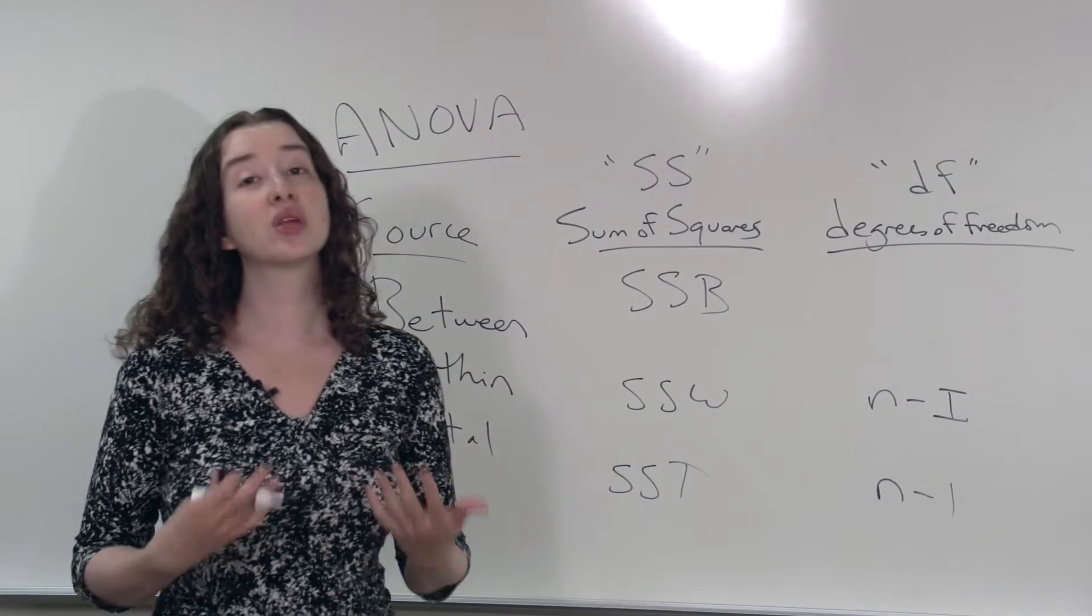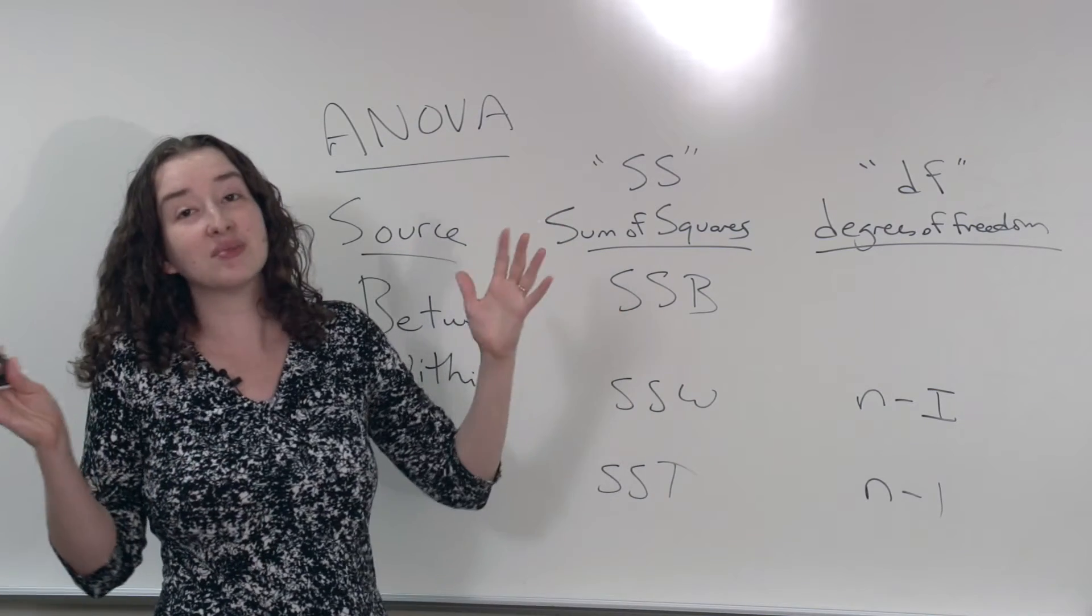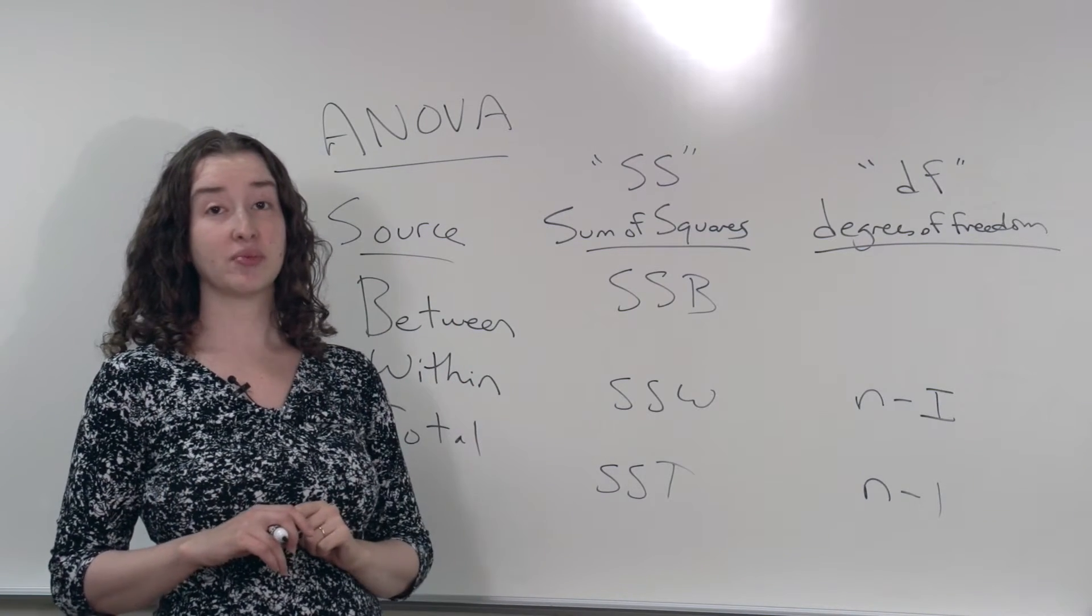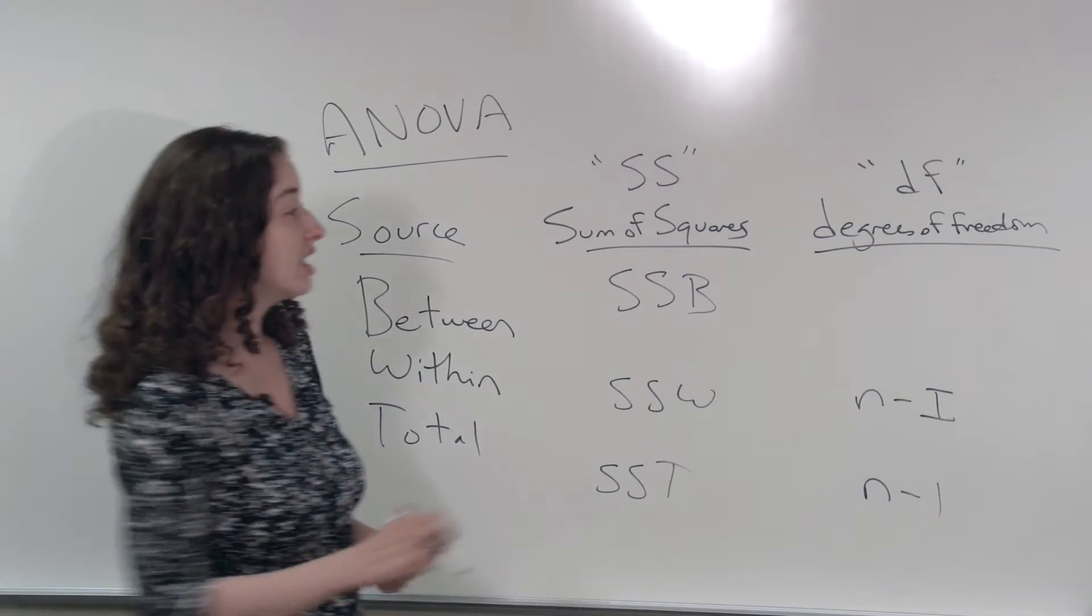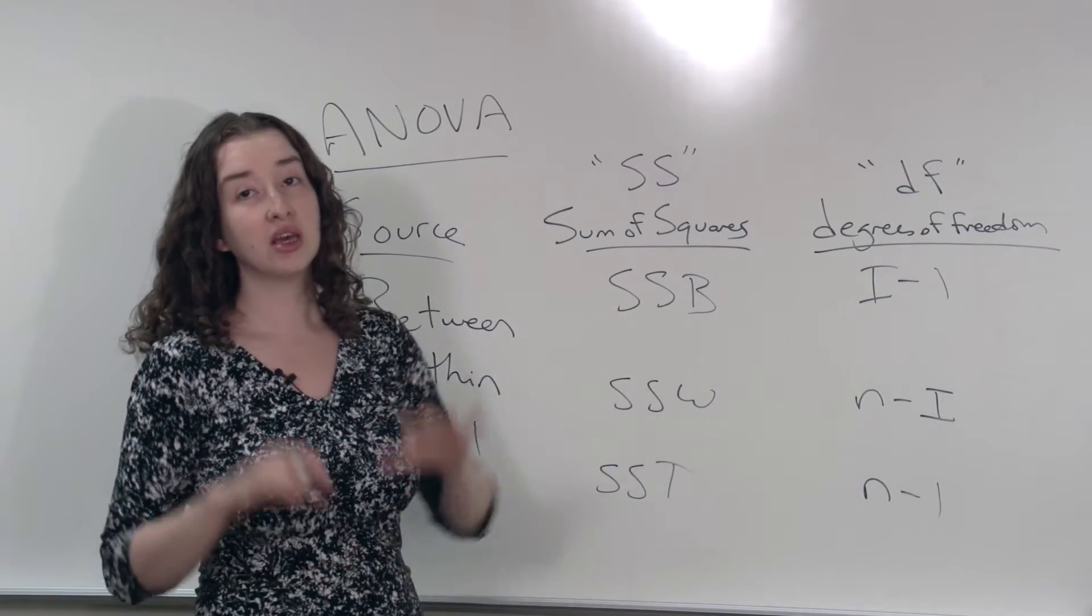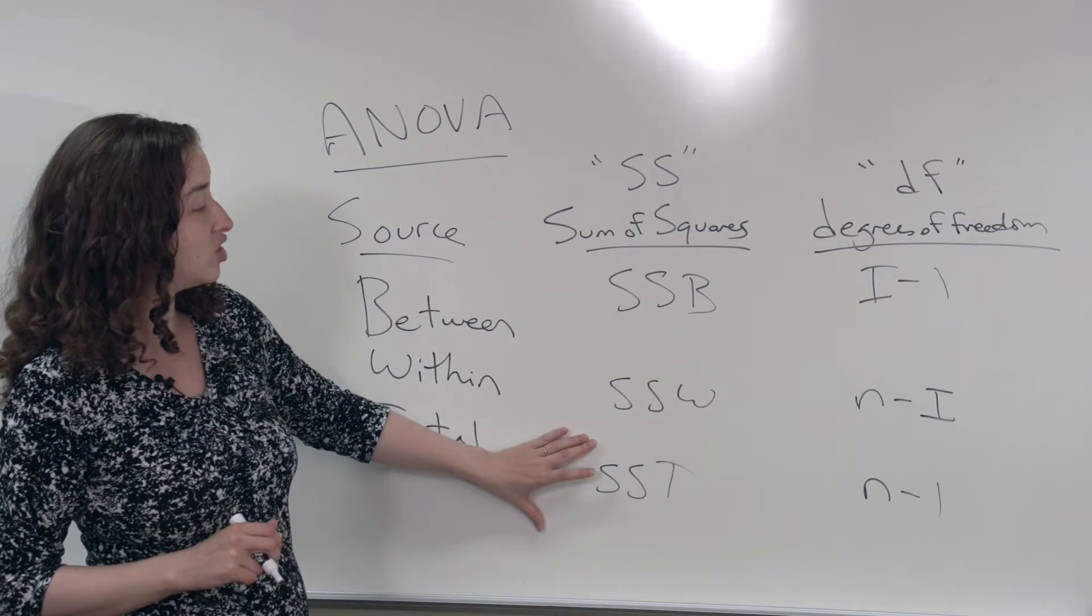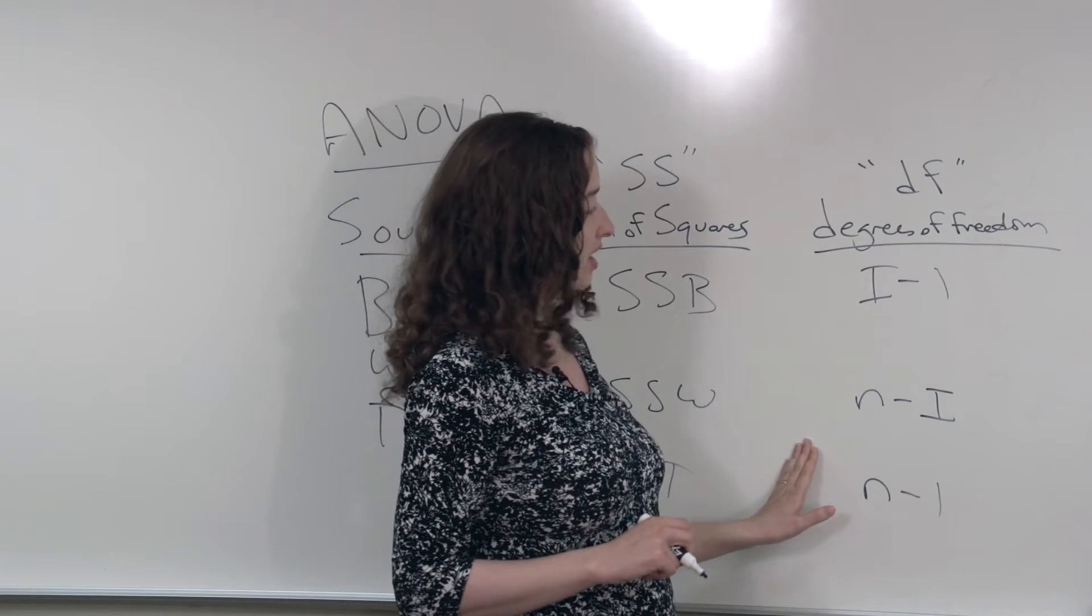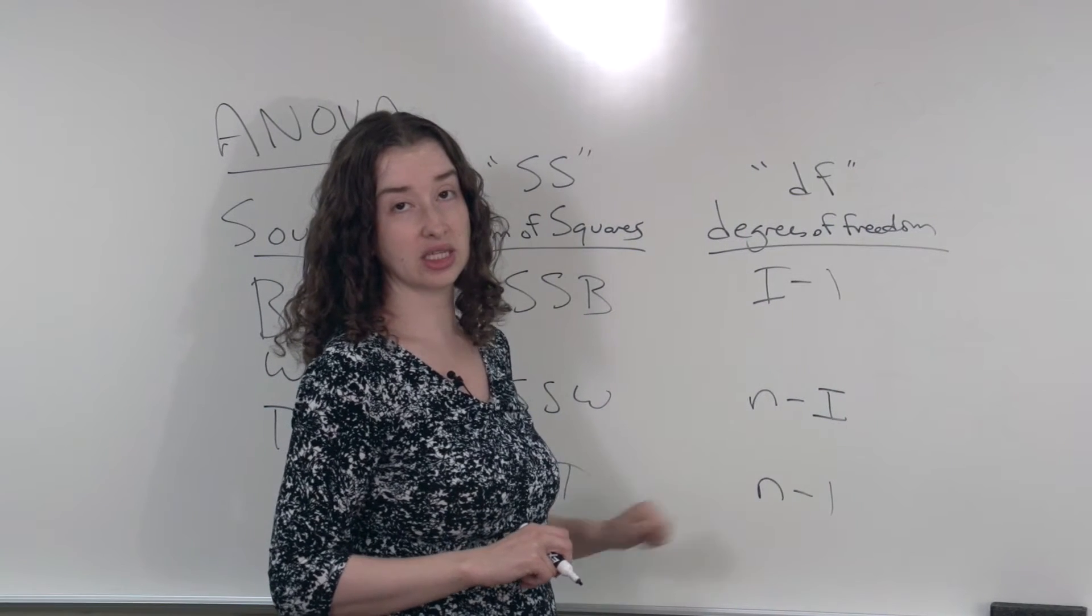We know that SSB is a quantity that's related to the variability between the different group means. However, it is true that the number of groups minus 1 is a quantity that helps us relate SSB to the variability between group means. Note that this sum of squares decomposition told us that SSB plus SSW is SST. But note it works in this column as well. i minus 1 plus n minus i, while the i's cancel we end up with n minus 1, these quantities sum as well.